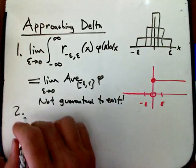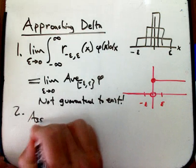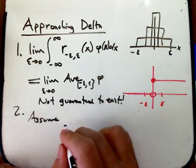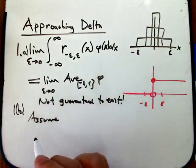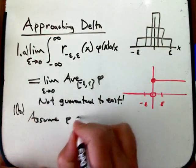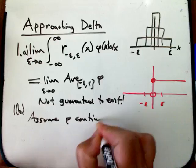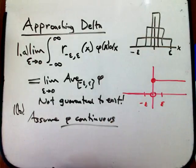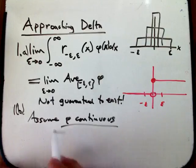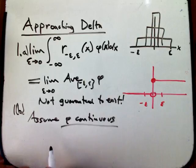Now let's assume phi is continuous. And in fact, for the rest of time, pretty much, we're going to assume that our test functions are continuous. And that's okay. We are inventing this theory. We get to decide how nice the test functions have to be. And this is a very mild condition.